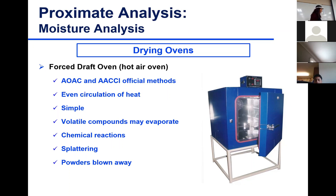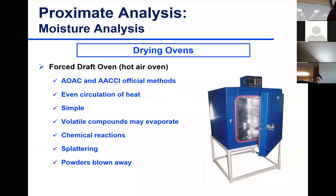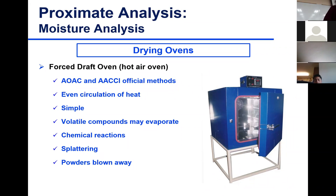Chemical reactions — we just talked about a few examples where they can lead to overestimation or underestimation. Make sure you know both. Burning of carbohydrates, for example, leads to overestimation. Splattering was discussed, and potential powders being blown away — which we can control by using a cover.